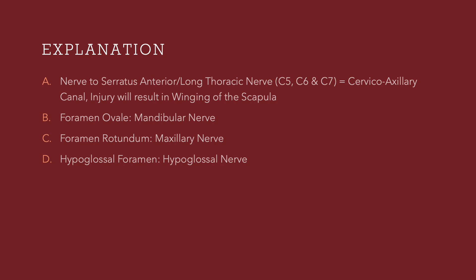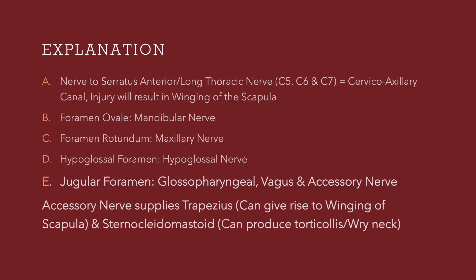However, this patient had winging of scapula plus was unable to move the neck on one side, so the nerve here is likely the spinal accessory nerve. Through foramen ovale you get the mandibular nerve. Through foramen rotundum you get the maxillary nerve. The hypoglossal foramen gives way for the hypoglossal nerve, which supplies the motor of the tongue.